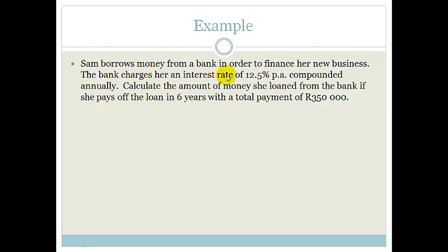Sam borrows money from a bank to finance her new business. The bank charges her an interest rate of 12.5% per annum compounded annually. Calculate the amount of money she loaned from the bank if she pays off the loan in 6 years with a total amount of R350,000.